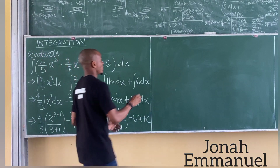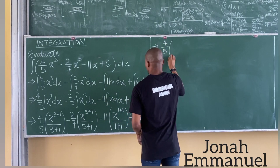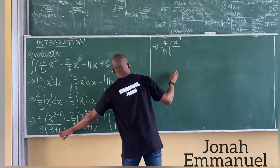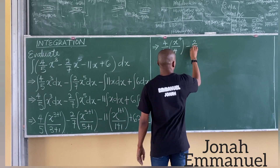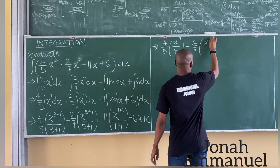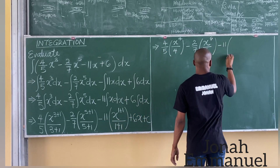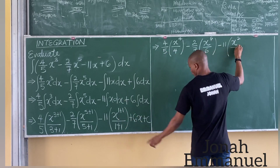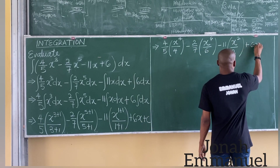Simplifying: 4 over 5 times x to the power 4, all over 4. Minus 2 over 7 times x to the power 6, all over 6. Minus 11 times x squared, all over 2. Plus 6x plus c. Working it out: 4 times x to the power 4 gives 4x to the power 4, all over 5 times 4 which is 20. Minus 2x to the power 6, all over 7 times 6 which is 42. Minus 11x squared all over 2. Plus 6x plus c.